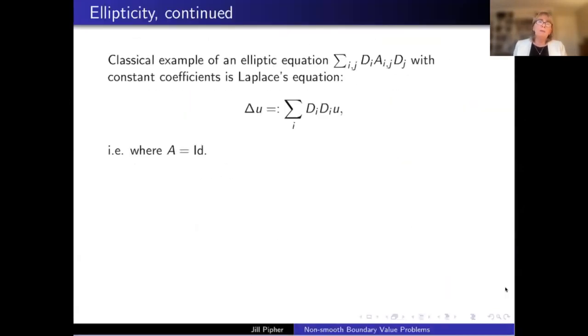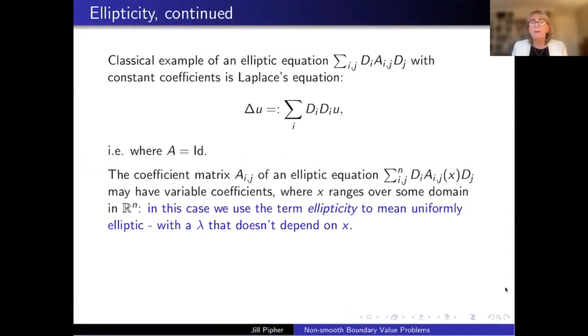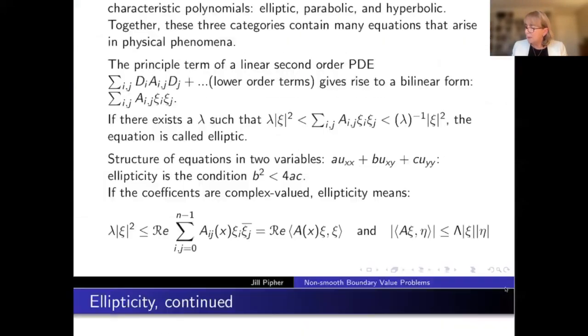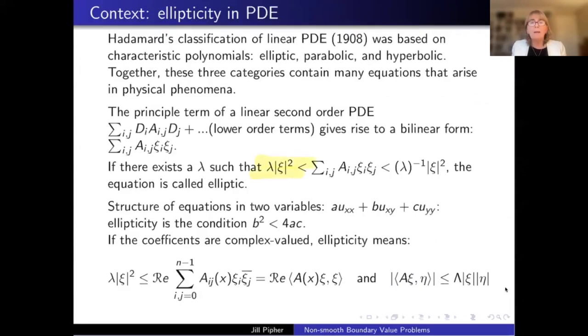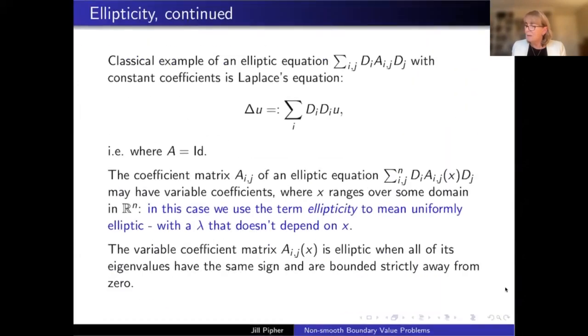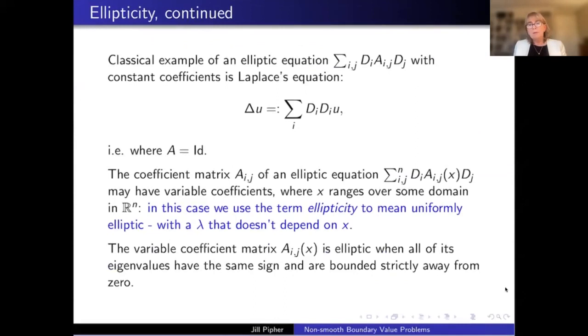Okay, so our classic example of an elliptic equation, in this case with constant coefficients, is Laplace's equation. And so here the matrix AIJ is just the identity. So the coefficient matrix of an elliptic equation might have variable coefficients and typically does, in this case where X ranges over the same domain, some domain in RN. And in this case we're going to use the term ellipticity to mean uniformly elliptic with a lambda, a parameter lambda, which is this parameter back here, which does not depend on X. So there's one lambda that works no matter what the variable X is.